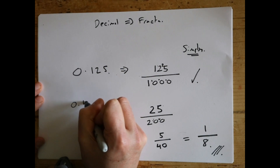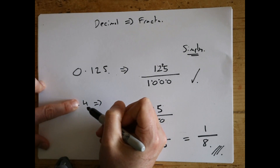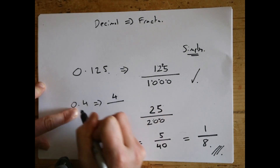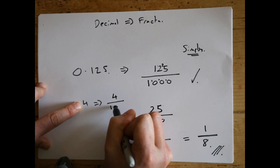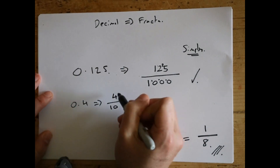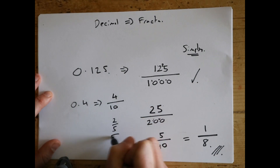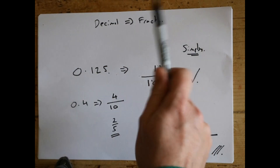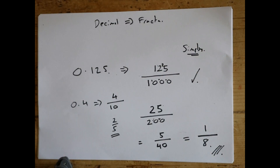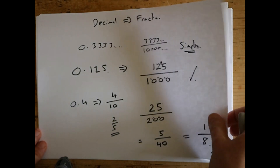Back to the method: for any decimal, say 0.4, put everything after the decimal point on the top — that's four. How many decimal places? One — so we put a one and one zero: four tenths. Then simplify: four tenths divided by two divided by two gives two fifths. So 0.4 is two fifths. You can go from decimal to fraction and back again — just keep picking numbers and see how you get on. That's decimals to fractions and fractions to decimals — hope it's useful and we'll see you in the next video.